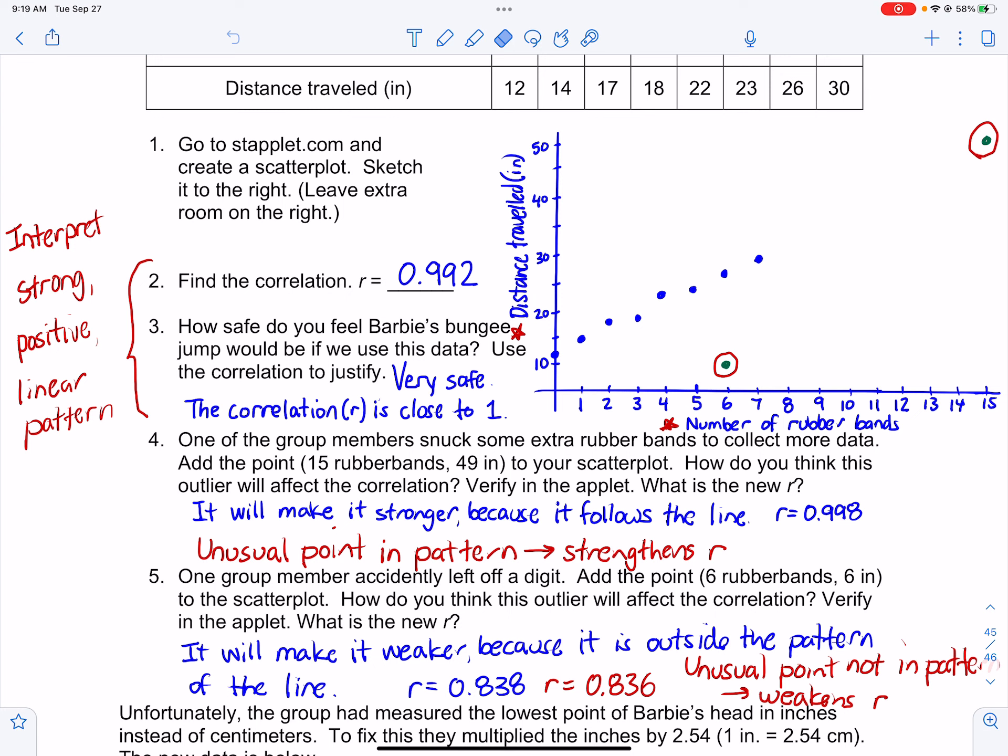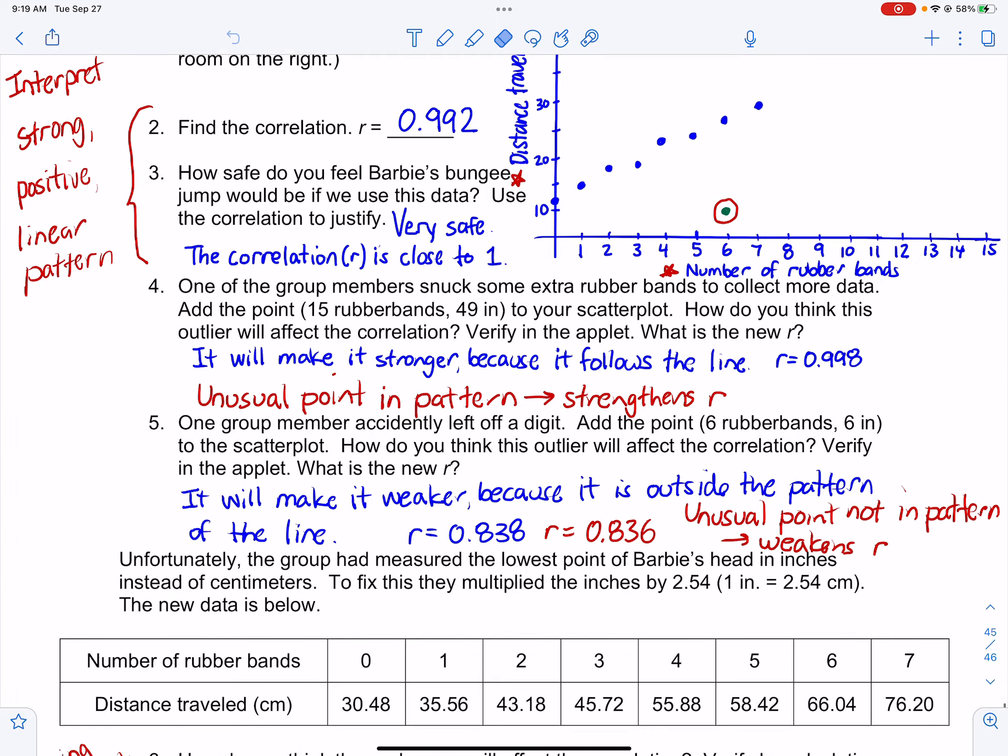So conversely, when you look at number five, you add a point here, and the point is an outlier also, an unusual point also, but it's not in the pattern of the data, and that's going to weaken the correlation.